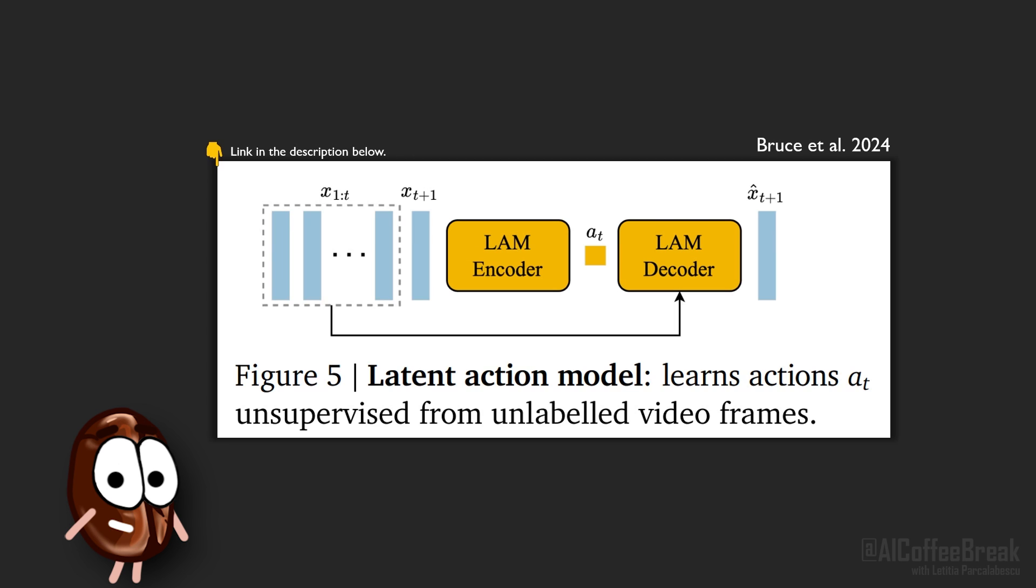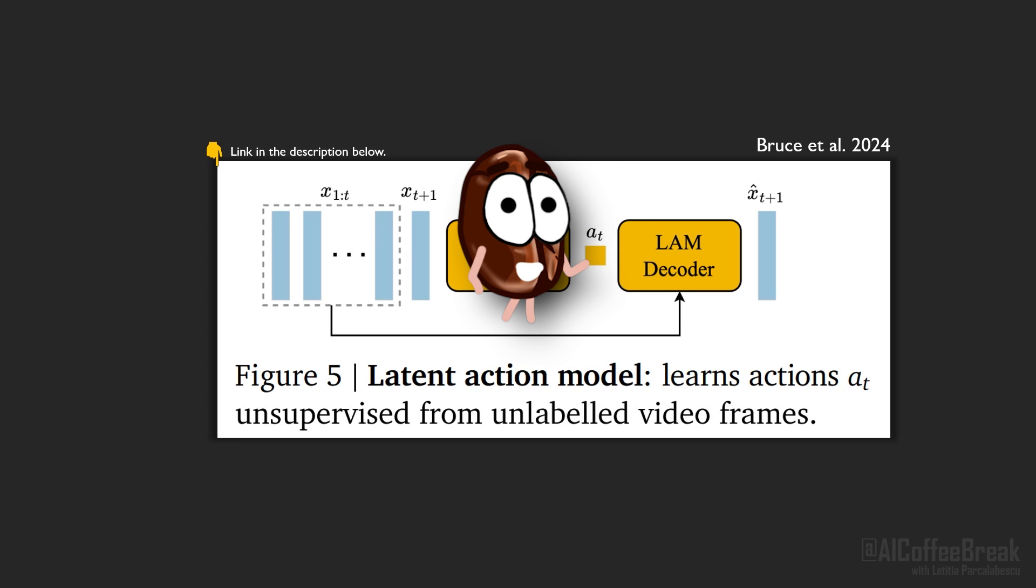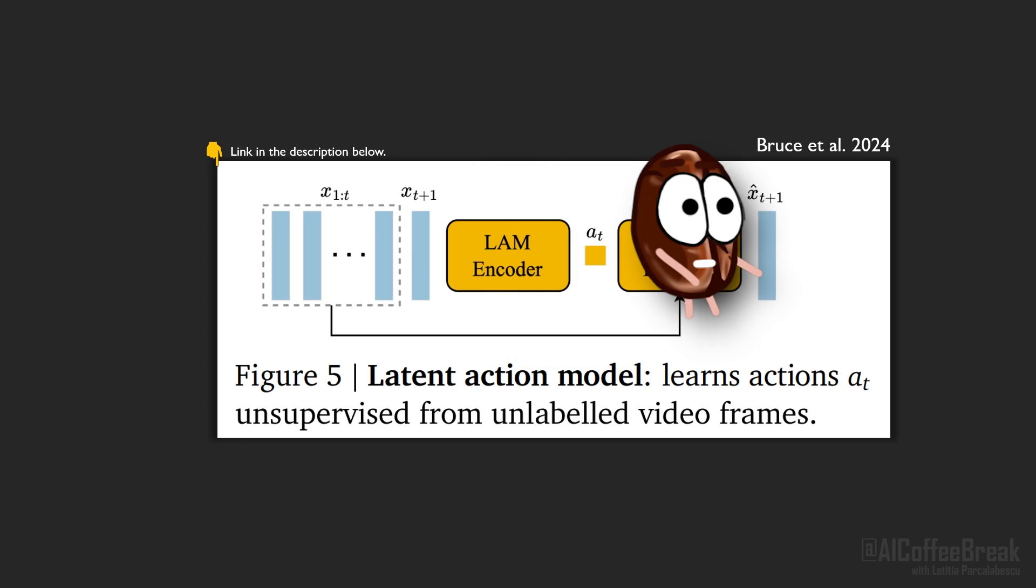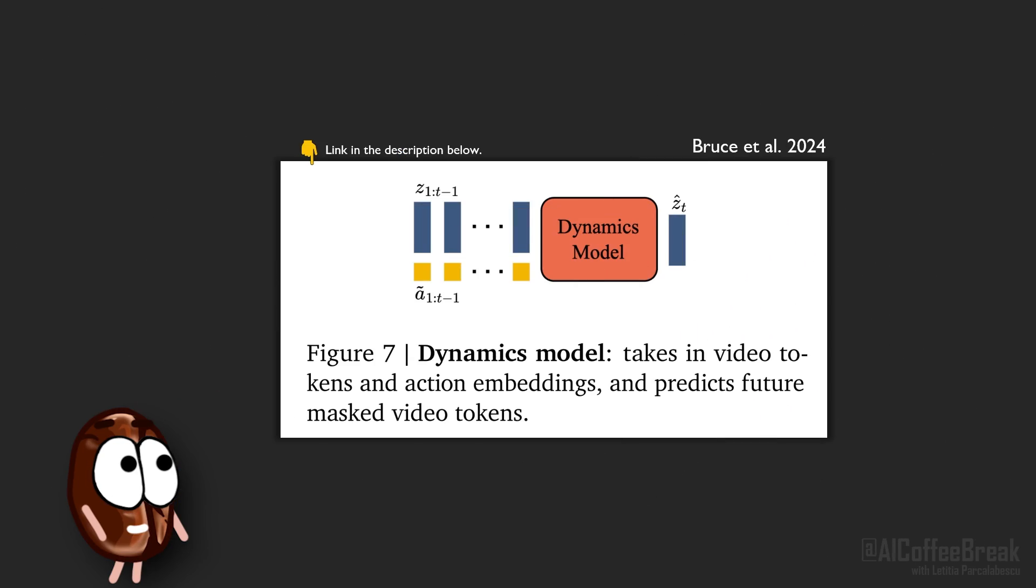Then an ST-transformer decoder looks at this encoded action and the historic frames to decode the next frame T+1. To say the same thing in more technical terms, the latent action model is trained like a VQ-VAE with a codebook size of eight. But this whole latent action model is just for discovering meaningful actions during training, because at inference the authors can discard everything but the learned actions codebook and generate frames with the dynamics model.